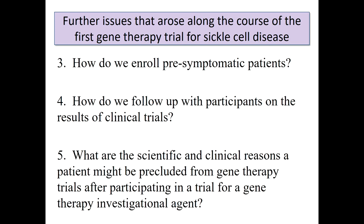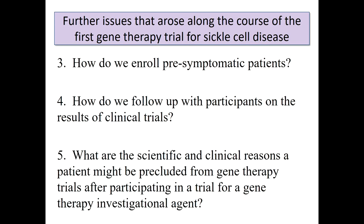I was given several questions to consider. How do we enroll pre-symptomatic patients? That's something we've struggled with. In the matched sibling transplant protocol, since we know it works so well, we can begin to relax the stringent inclusion criteria. But in the gene therapy setting, we're not there yet. We need to quantitate the benefit in patients for whom the risk-benefit favors the intervention — someone whose risk from current disease is more than what we know about the transplant.